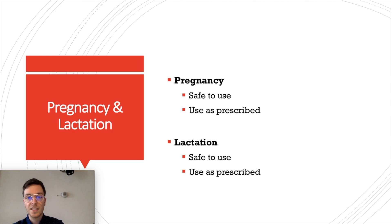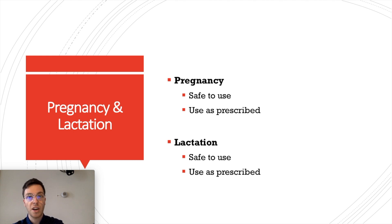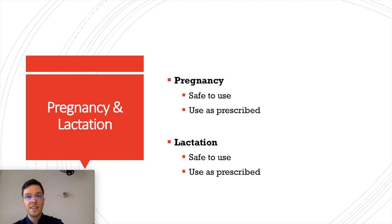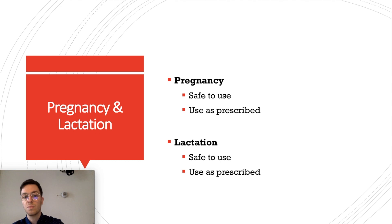For pregnancy, fluticasone is safe to use. It will not pass through the placenta and will not be harmful for the baby or fetus, and can be used as prescribed. For lactation — breastfeeding — it is the same story: it will not pass through in breast milk and therefore is safe to use as prescribed.